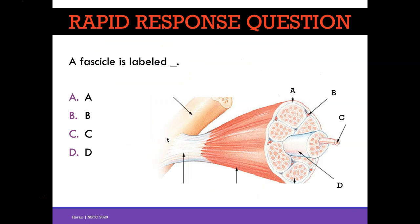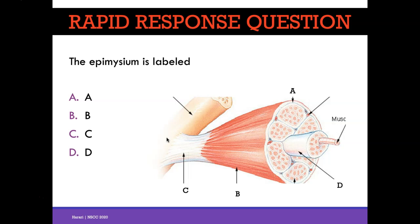Pausing to review the hierarchy: the answer identifying a muscle fiber is D. The epimysium is labeled as C. The perimysium is labeled as B, and A is the perimysium shown in blue around a fascicle.